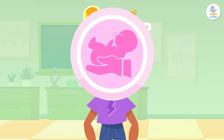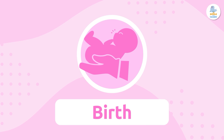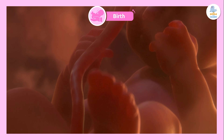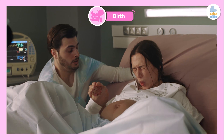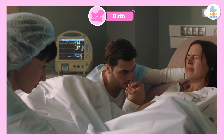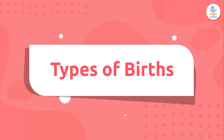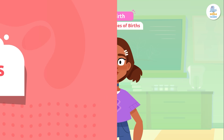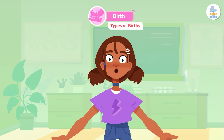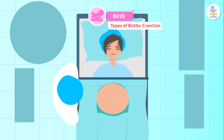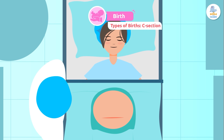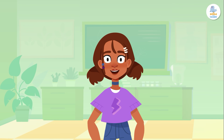Birth: the last stage of reproduction is birth. Birth begins when the fetus is about to be born — the mother begins to feel movements inside her body called contractions, which push the baby out through the vagina. Not all babies are born vaginally; in some cases, because of complications, they may be delivered by C-section, an operation that involves making an incision in the mother's abdominal wall to remove the baby.